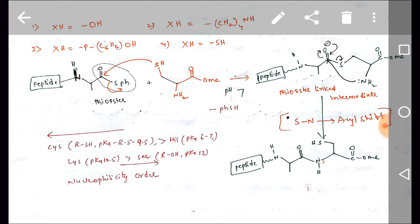I have taken SH in the place of XH here. So if I take SH, it is simply cysteine. Then the lone pair of electrons on sulfur can attack the thioester and cleavage of PhSH occurs, leading to formation of thioester-linked intermediate.